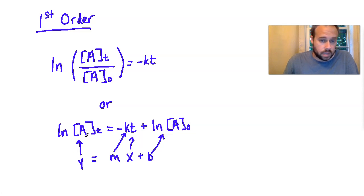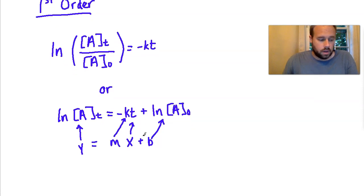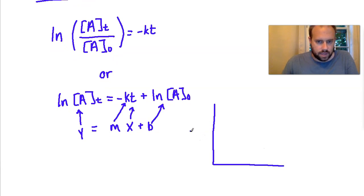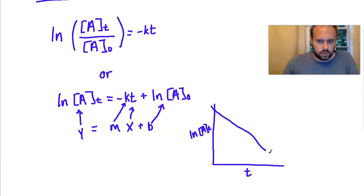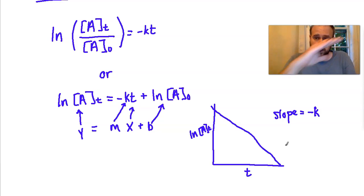So y equals mx plus b: y is the concentration at final time, the negative rate constant is the slope — and a negative slope means starting high and going downward on a linear path — x is t, and the y-intercept b is the initial concentration. Graphically, on one axis we have the ln of the concentration of A at time t, and on the other axis we have t, and we expect a downward sloping line. The slope equals negative k.